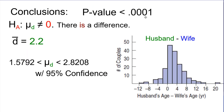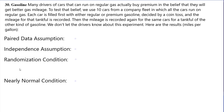Our conclusions: because our P-value is less than 0.001 — practically zero, much more statistically significant than any reasonable alpha level — we can confidently reject the null hypothesis in favor of the alternative, which is that there is a difference. Even with a one-sided test, the P-value would be cut in half and we'd still reject. Our average difference was 2.2 years, so we centered our confidence interval there and said with 95% confidence it's somewhere between 1.6 and 2.8 years older for husbands.